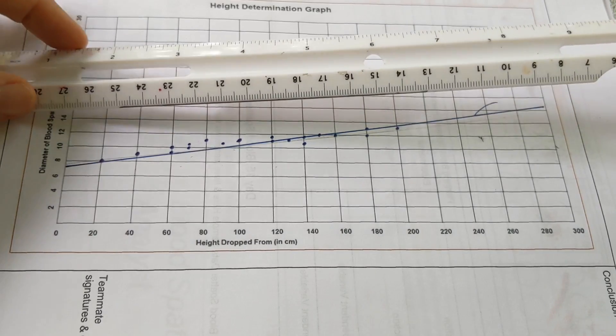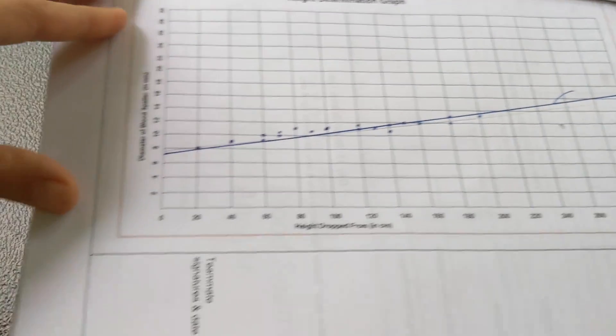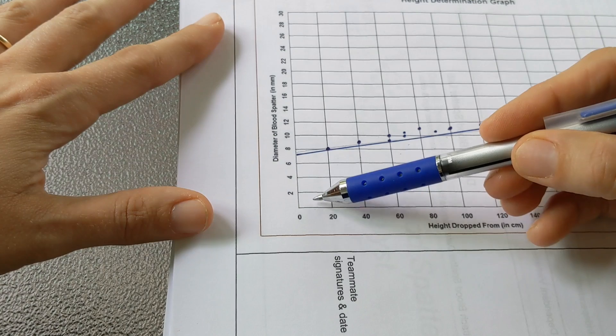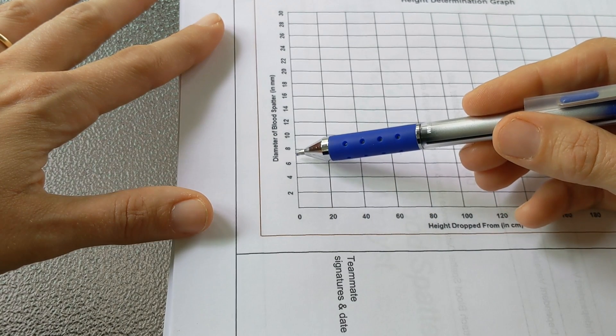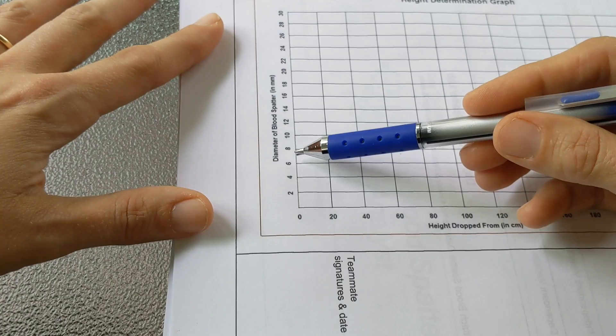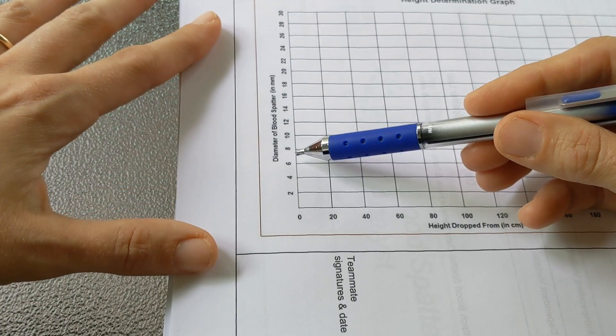If we wanted to go all the way down to 10 centimeters in height, which I didn't do, we read up to the line and then we read across, and a little bit bigger than 7 millimeters would be the diameter of the droplet.